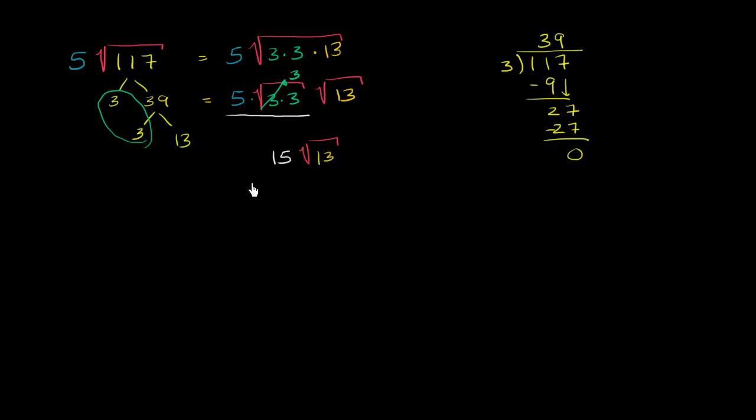Let's do one more example here. So let's try to simplify 3 times the square root of 26. Well, 26 is clearly an even number, so it's going to be divisible by 2. We can rewrite it as 2 times 13.